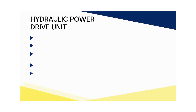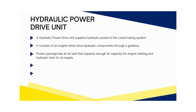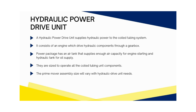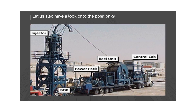A hydraulic power drive unit supplies hydraulic power to the coiled tubing system. It consists of an engine which drives hydraulic components through a gearbox. The power package has an air tank that supplies enough air capacity for engine starting and a hydraulic tank for oil supply. They are sized to operate all the coiled tubing unit components, and the prime mover assembly size will vary with hydraulic drive unit needs. Let us also have a look at the position of the hydraulic power unit or power pack.